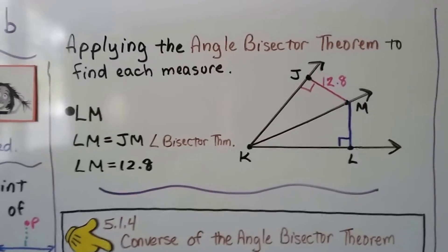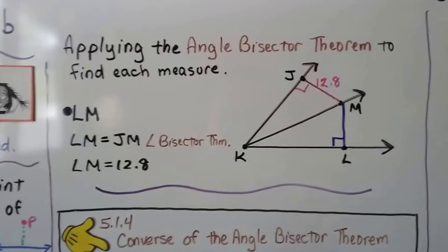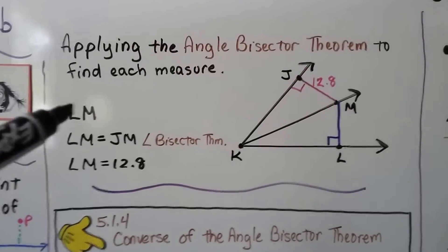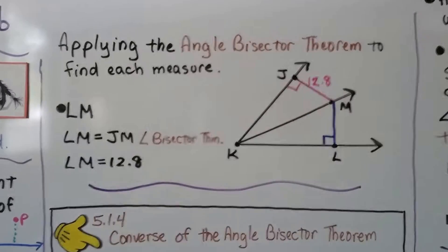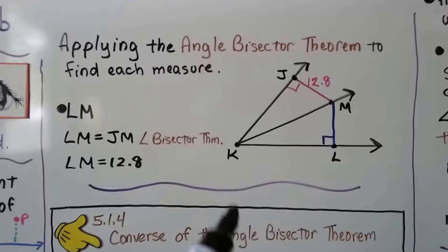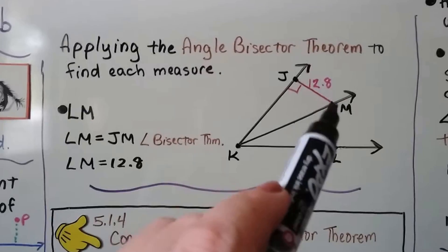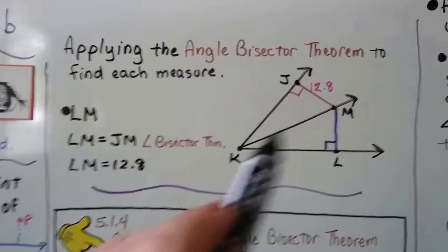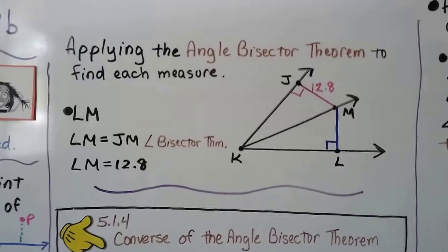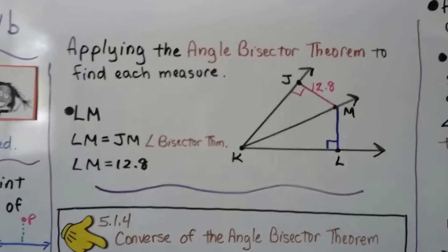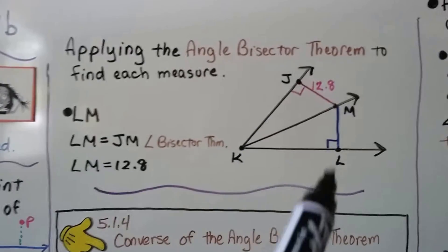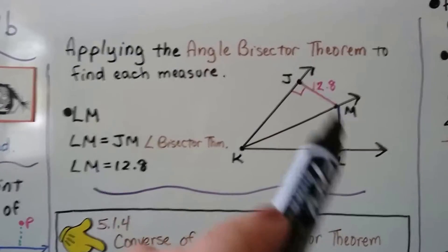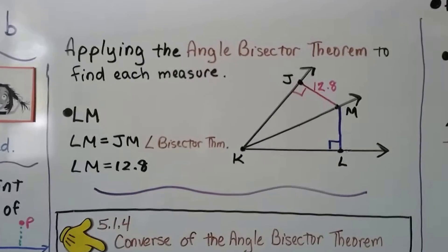Here's applying the angle bisector theorem to find each measure. We're going to find LM, which is this blue one right here. M is a point on the bisector, and LM is going to be equal to JM. So LM is equal to 12.8.